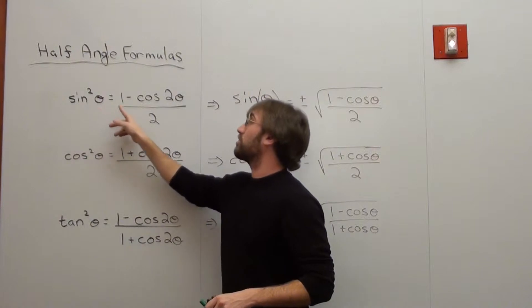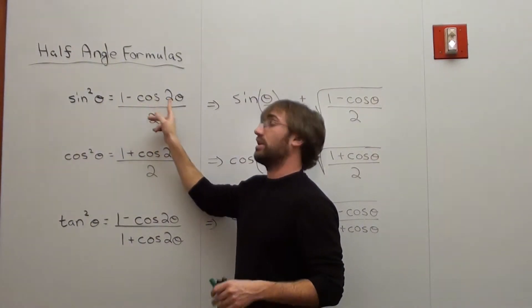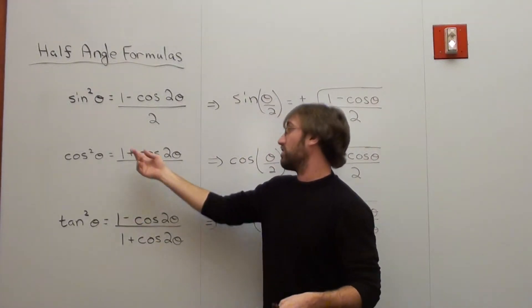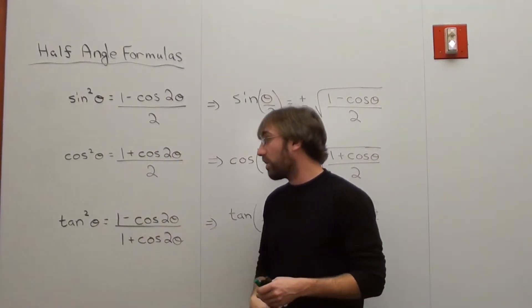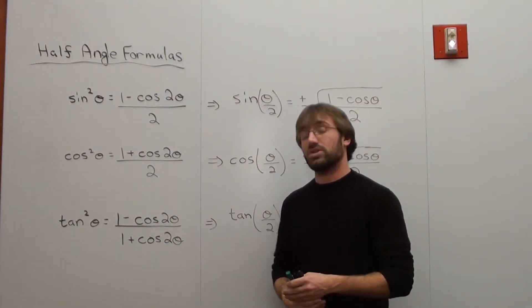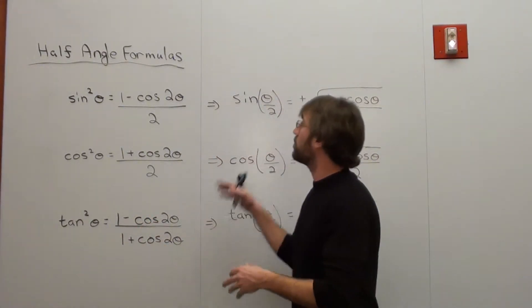way to write sin²θ is (1 - cos 2θ)/2. Another way to write cos²θ is (1 + cos 2θ)/2. And another way to write tan²θ equals (1 - cos 2θ)/(1 + cos 2θ). What you do is derive these half angle formulas from that. What I mean by that is, I'm going to say, okay, if I